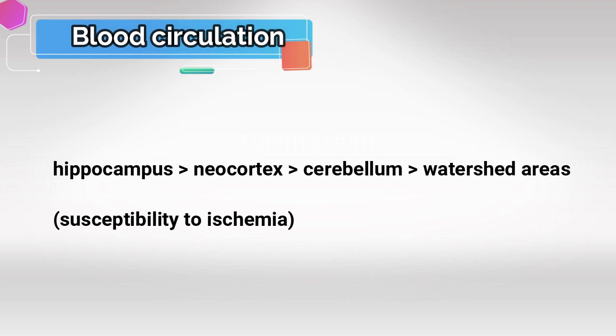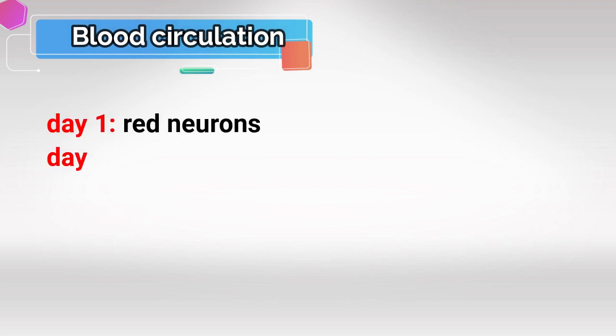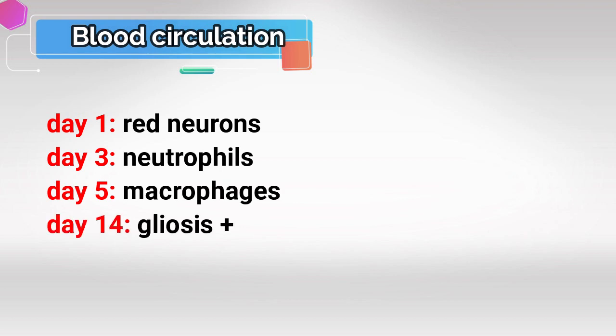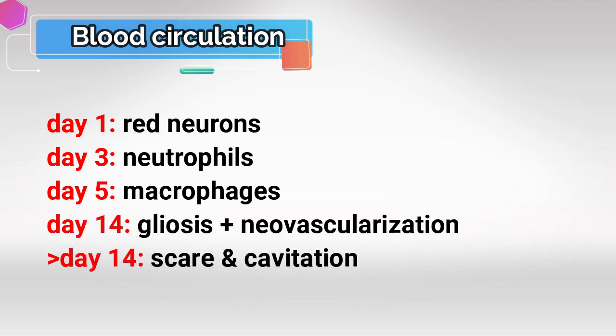Also related to the brain, you need to know which areas are most vulnerable to ischemia — I'm going to put those right here. One very important topic is the appearance of neurons after ischemia under the light microscope. Within the first day we're going to have red neurons. By the third day we'll have neutrophil infiltration. By the fifth day we'll have macrophages. By day 14 we'll have gliosis and neovascularization. After that we're just going to have a scar.